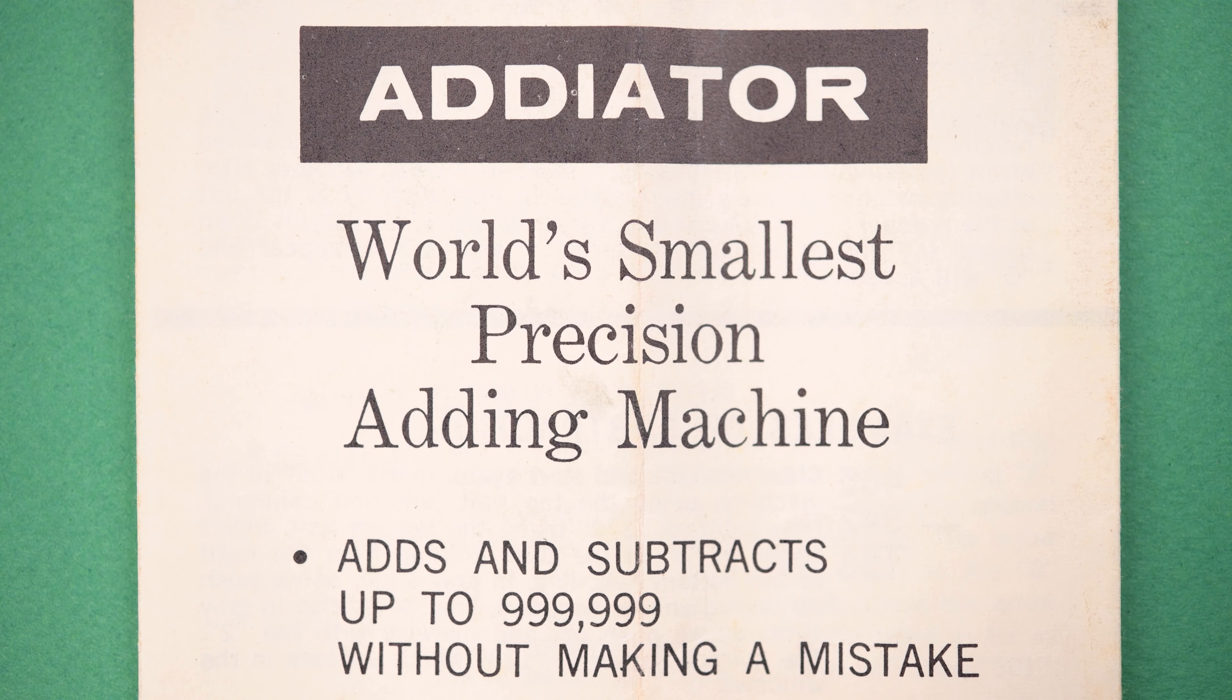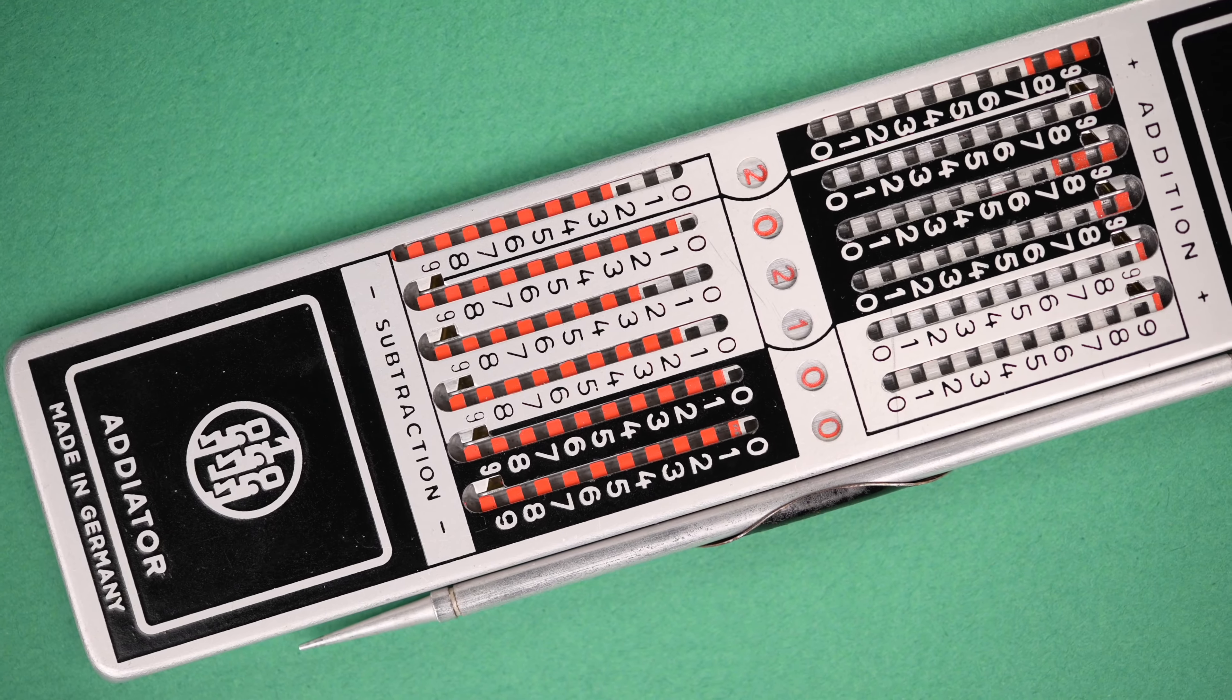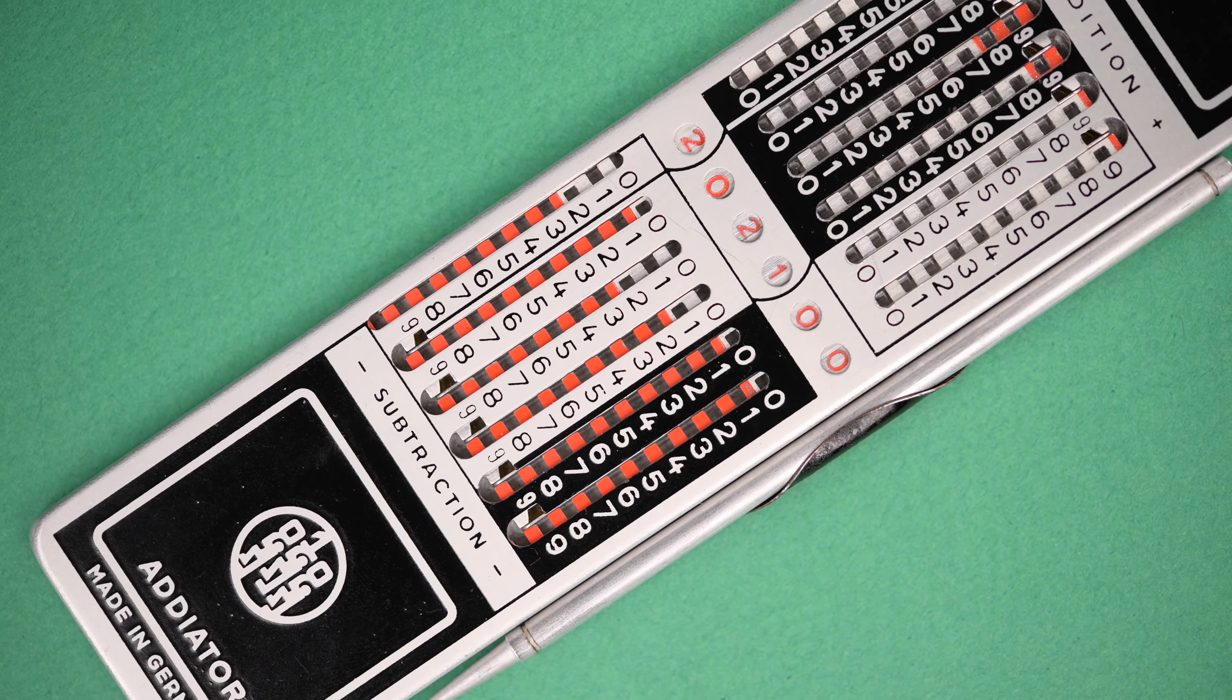These calculators competed with slide rules, which could do multiplication and division, but not with the same perfect precision. Some models of Adiator actually had a slide rule on the back, so you could switch between them depending on what you needed.